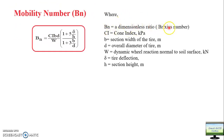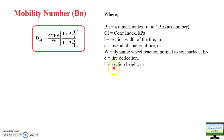The formula for BN was given by Brixius, a scientist who developed a method to theoretically measure traction. BN equals (CI · B · D) / W · (1 + δ/H), where CI is cone index in Pascals, B is section width, D is tire diameter — both already explained in the tire lecture — W is dynamic wheel reaction (the normal force on the soil from the tire), and δ is tire deflection relative to section height H.